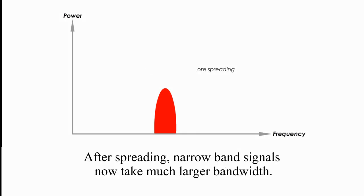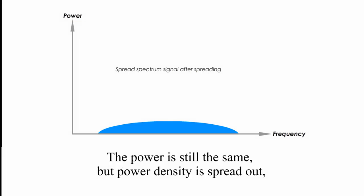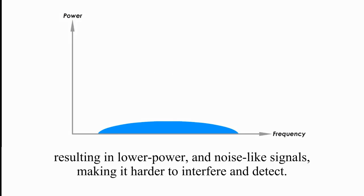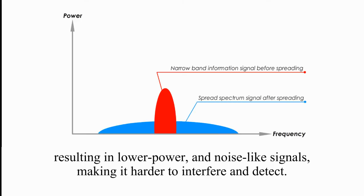After spreading, narrowband signals now take much larger bandwidth. The power is still the same, but power density is spread out, resulting in lower power and noise-like signals, making it harder to interfere and detect.